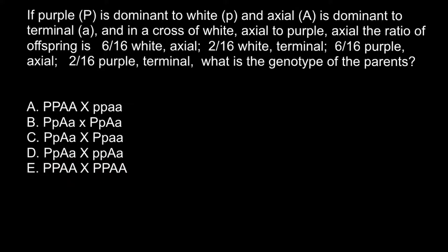There is no way that the progeny of these two parents would show any phenotypic or genotypic variation, because the progeny of such a cross would also have the same genotype and phenotype. So we can cross out this variant. Let's now take a close look at the next genotype — option B. It looks different, but the result would be the same.